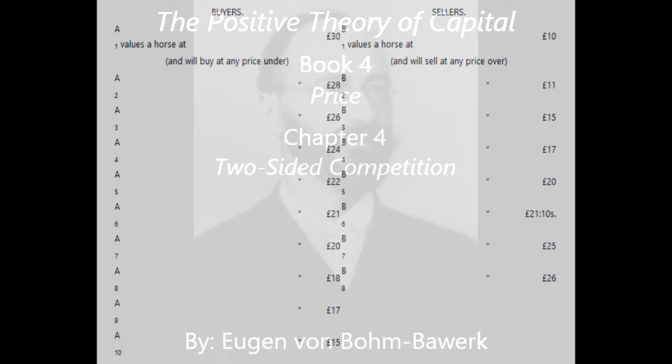In the same way B1, who, economically, could quite well sell at the price of eleven, and at that price could very easily find buyers, will carefully hold back from offering his horse at the lowest figure which he would accept, and will not reduce his price below what he must take if he is to keep his place in the competition. It may be assumed, then, that the transaction will begin with the buyers holding back and offering low prices, and with the sellers holding back and asking high prices.